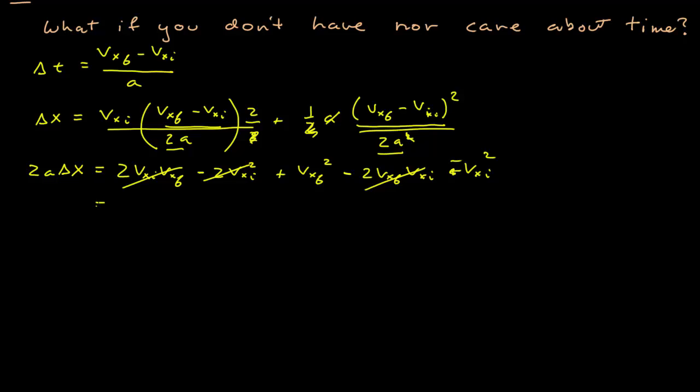So this is just equal to vx final squared minus vx initial squared. Or, another way to write that, vx final squared is equal to vx initial squared plus 2a times the position interval.